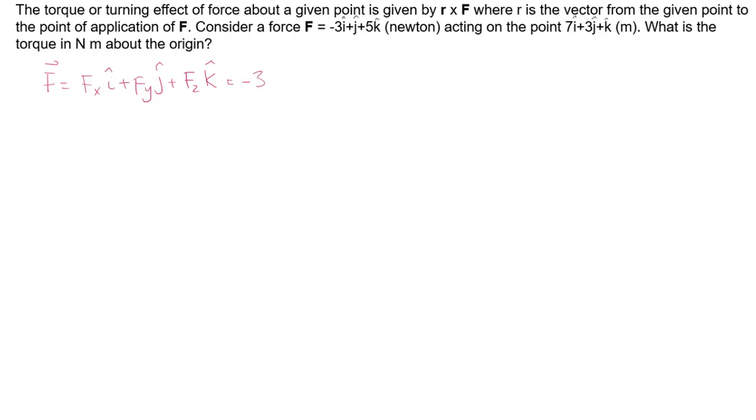So it means that I can write it down in this way: F = -3i + j + 5k. And similarly, r is given as 7i + 3j + k. So here 7 is r_x, 3 is r_y, and 1 is r_z.